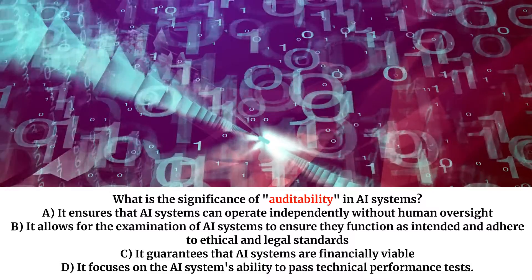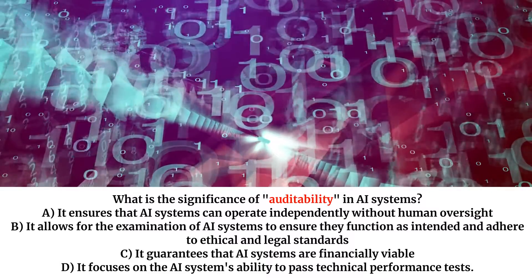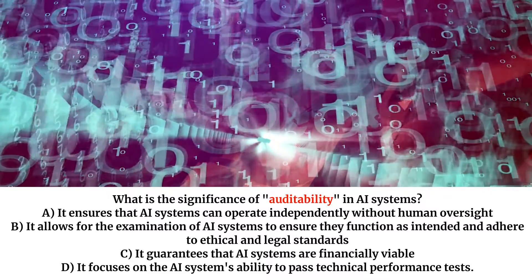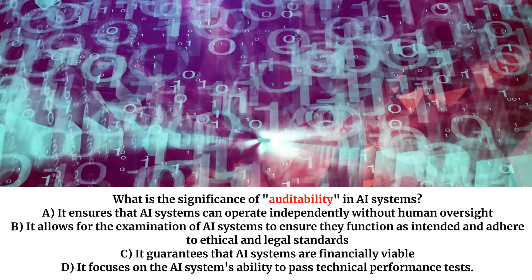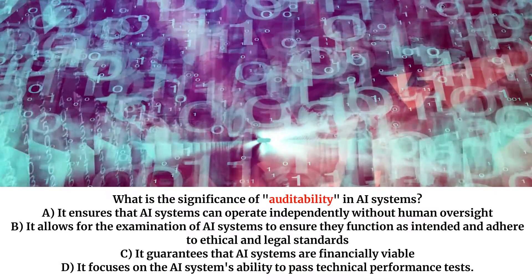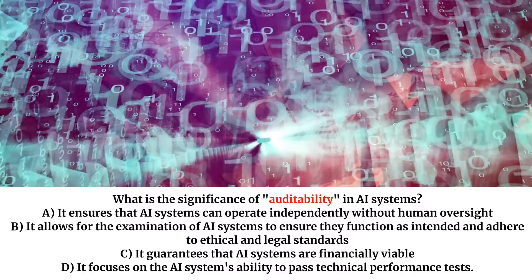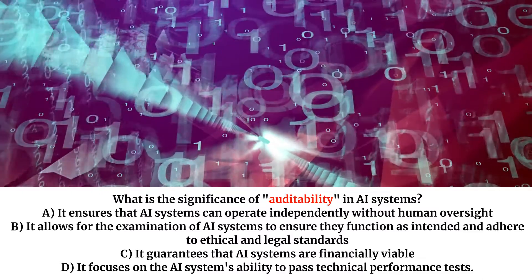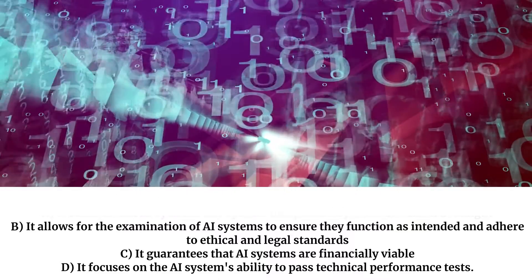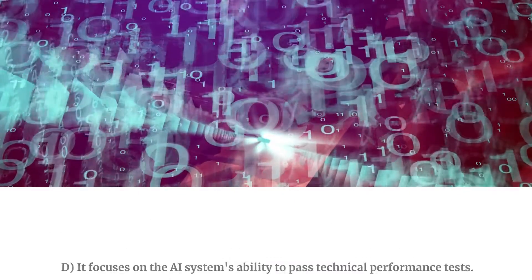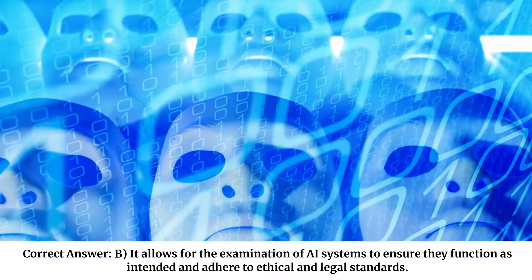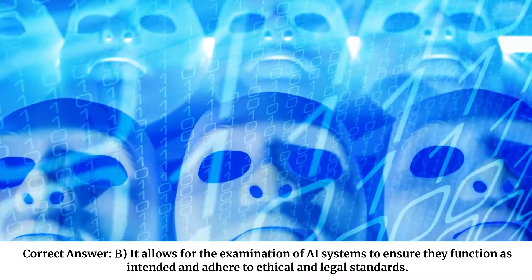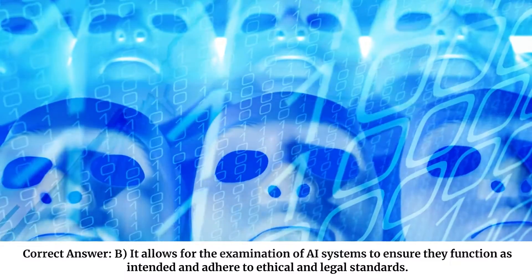What is the significance of auditability in AI systems? A. It ensures that AI systems can operate independently without human oversight. B. It allows for the examination of AI systems to ensure they function as intended and adhere to ethical and legal standards. C. It guarantees that AI systems are financially viable. D. It focuses on the AI system's ability to pass technical performance tests. Correct answer: B. It allows for the examination of AI systems to ensure they function as intended and adhere to ethical and legal standards.